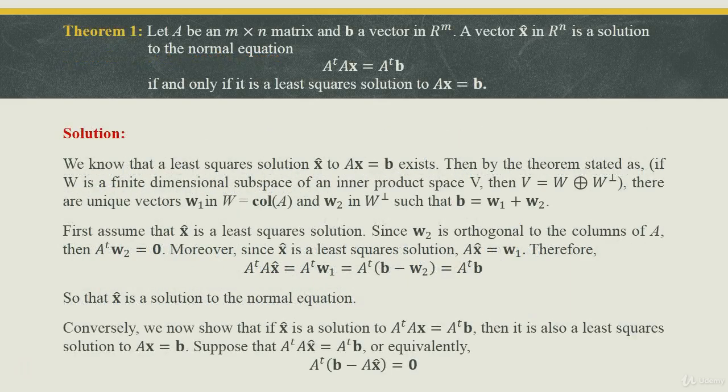Let's talk about some theorems and examples. The first theorem: let A be an m×n matrix and b be a vector in R^m. Then a vector x̂ in R^n is a solution to the normal equation A^T A x̂ = A^T b.